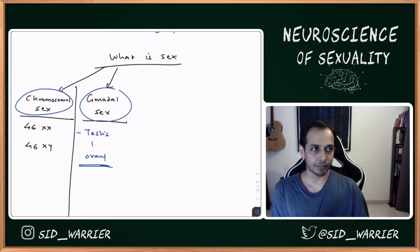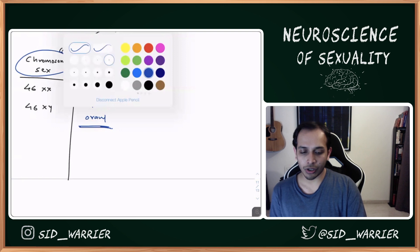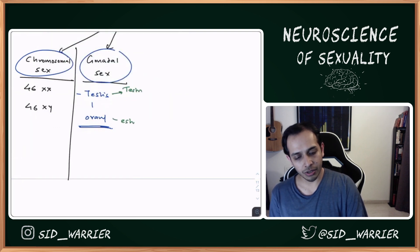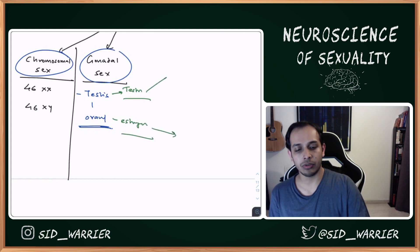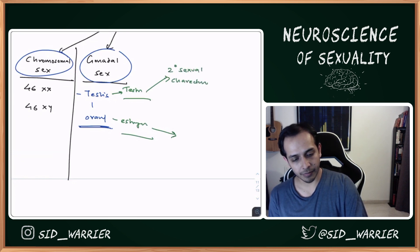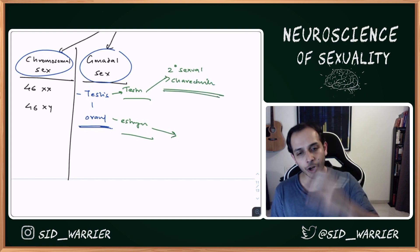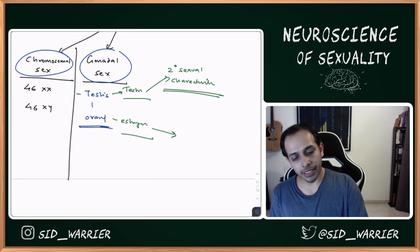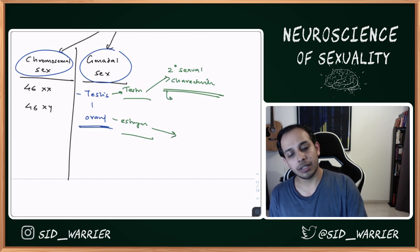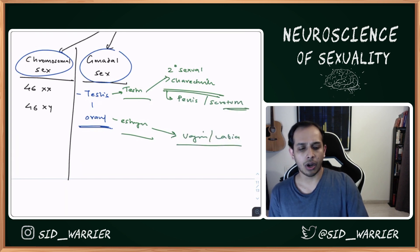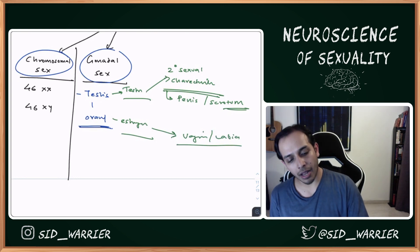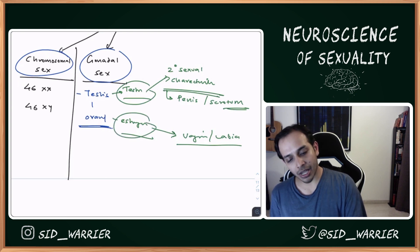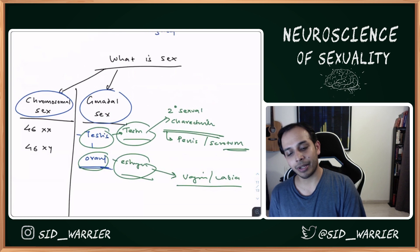After the gonads form, the testes or ovary releases hormones — testosterone or estrogen — which then go on to cause what are called secondary sexual characteristics. This happens from the fetus all the way through to puberty. From the onset these characteristics include the genital organs: in males the penis and scrotum, and in females the vagina and labia. All these genital structures happen because of the hormones, which happen because of the gonads, which happen because of the chromosomes.